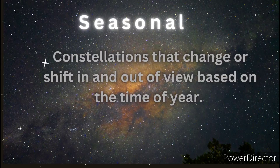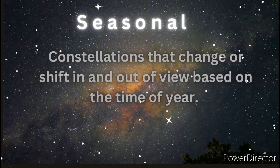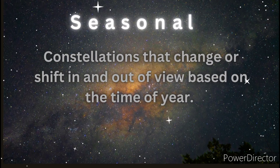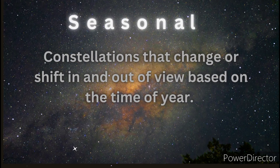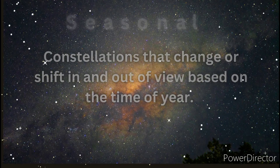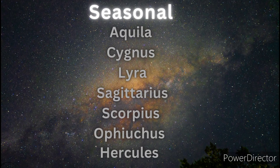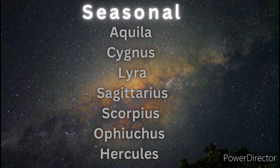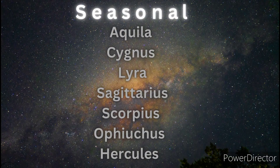The third category is Seasonal — constellations that change or shift in and out of view based on the time of the year. These are: Aquila, Cygnus, Lyra, Sagittarius, Scorpius, Ophiuchus, and Hercules.